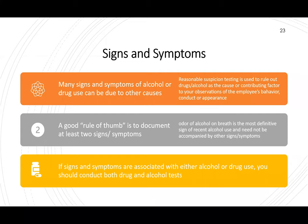Signs and symptoms of alcohol or drug use can be due to other causes — sleep deprivation, stress, flu, or illness. However, they may also be due to drugs or alcohol. The goal of reasonable suspicion testing is to rule out whether it is drugs or alcohol causing those observable signs.